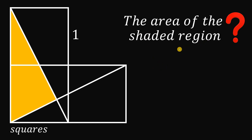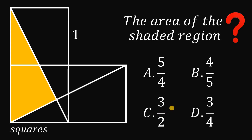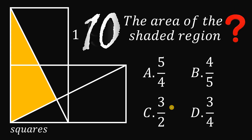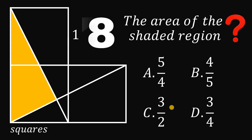The question is: what is the area of the shaded region? Here are the choices — Letter A: 5 over 4. Letter B: 4 over 5. Letter C: 3 over 2. Letter D: 3 over 4. You can pause this video if you want to give this problem a try.